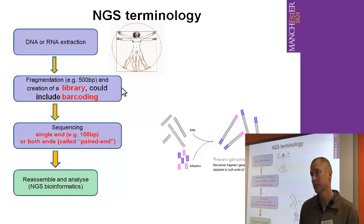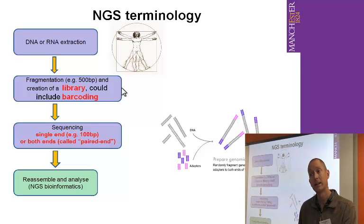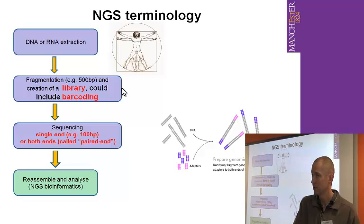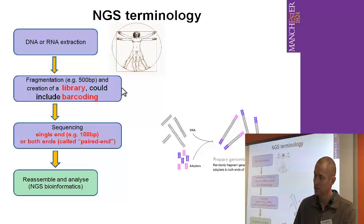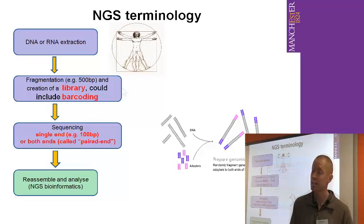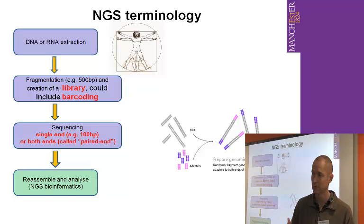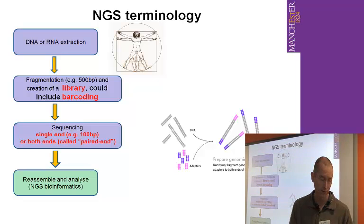Then there's also barcoding. Barcoding allows you to put multiple samples onto one lane of a sequencer. You extract your samples — say you've got 20 — you put a barcode onto each one, then you pool them and sequence them together. Bioinformatically it's quite easy to resolve that. In fact, often it happens even before the bioinformatician gets the data — it gets processed and you just get them already nicely separated into separate samples. But that's all at the level of preparation before you sequence.